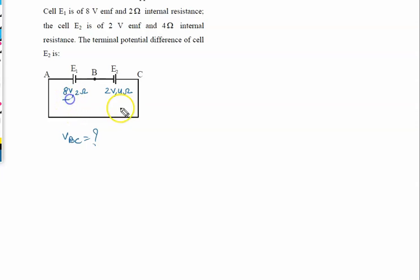Of course 8 volt will dominate over the 2 volt, so direction of flow of current will be like this. So net current in the circuit is going to be net EMF: 8 volt minus 2 volt is 6 volt, and net resistance is 6 ohm. So you can say net current flowing in the circuit is 1 ampere.